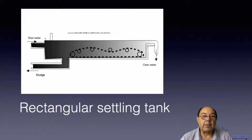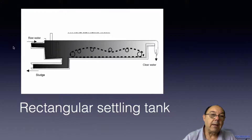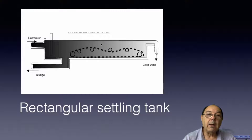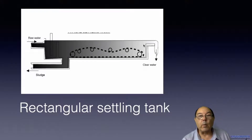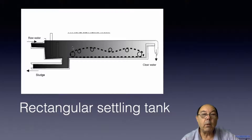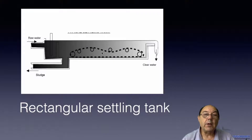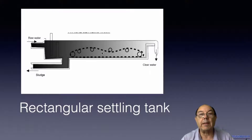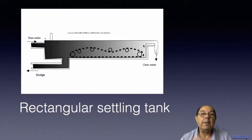This is a rectangular settling tank, and what's happening here is the raw water comes in at this end of the settling tank, it slowly moves this way until it finally gets to the weir, and clear water overflows. What's happening in this space is that the particles of dirt and debris are slowly settling out. The large particles settle first and the small particles take longer to settle — and this is Stokes law.